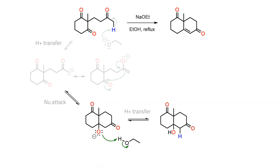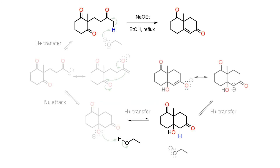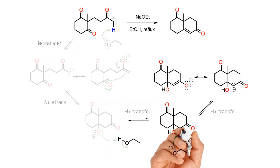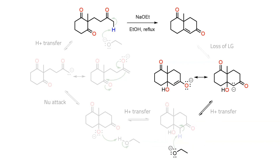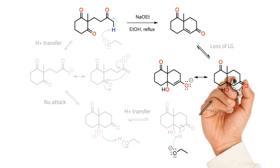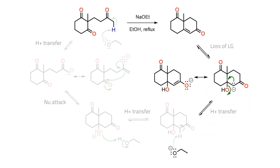A rapid proton transfer gives the beta-hydroxy ketone aldol product. As the reaction medium is still basic, removal of an alpha proton generates the resonance-stabilized conjugate base, which then undergoes elimination of the beta-hydroxy group in the rate-determining step of the E1cb process.